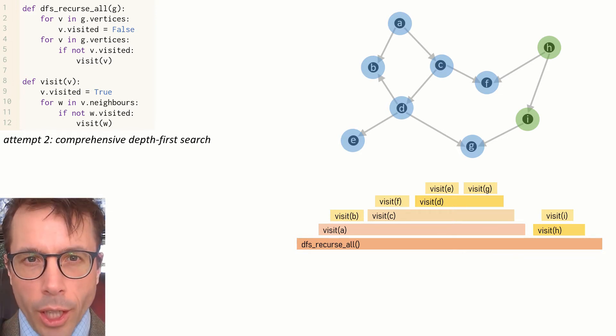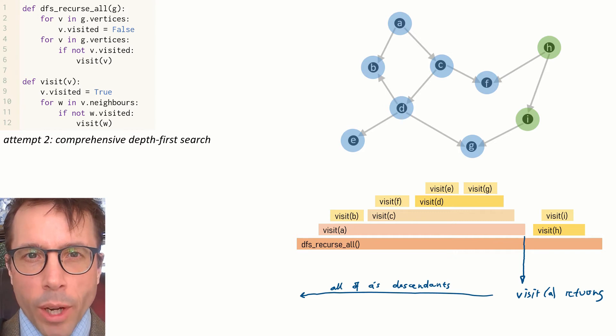Here is the key insight - the proper way of understanding what depth-first search gives us. Look at the time when visit A returns. We won't return from visit A until we've finished visiting all of A's descendants, which means all of A's descendants are on the left of this point where we return from visit A. In other words, we shouldn't keep track of when each call to the visit function starts - we should keep track of when it returns.